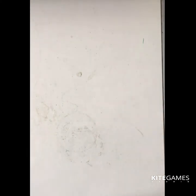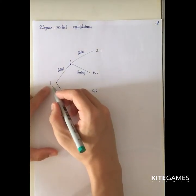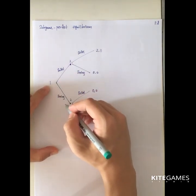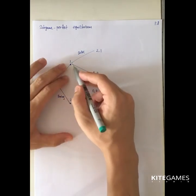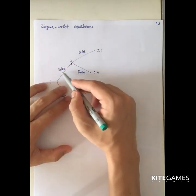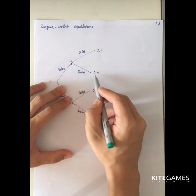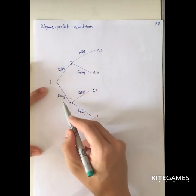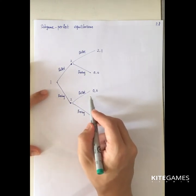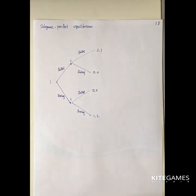We can express the game in extensive form — a game tree. Player one (wife) chooses ballet or boxing. After her choice, player two (husband) chooses ballet or boxing. If both choose ballet, payoff is (2,1); if wife chooses ballet and husband chooses boxing, (0,0); if wife chooses boxing and husband chooses ballet, (0,0); and if both choose boxing, (1,2). To find which Nash equilibrium is selected, we use backward induction.